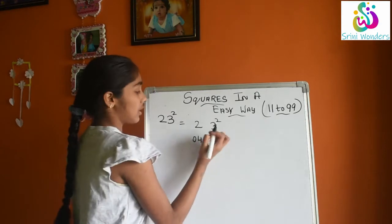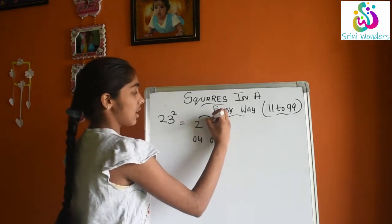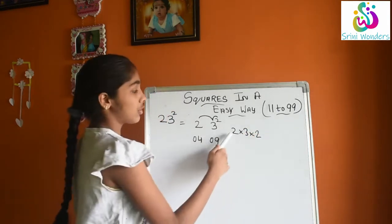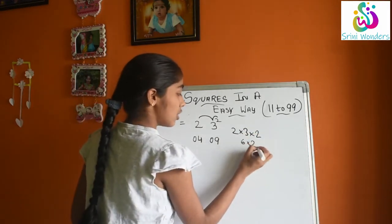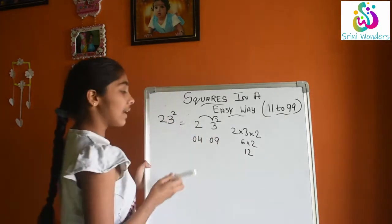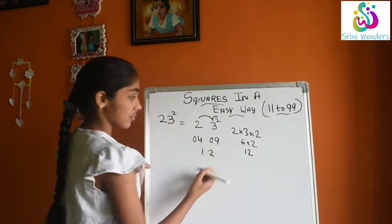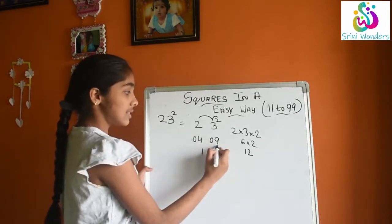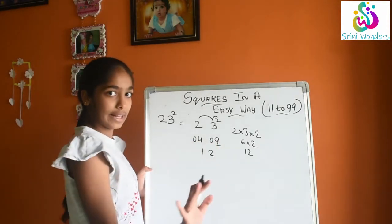Now what we will do? 2 into 3 into 2 we will do. 2, 3's are 6, 6 into 2 is 12. Now we will write 12 here in the middle. So we will leave the last digit. Last digit compulsorily we will leave.